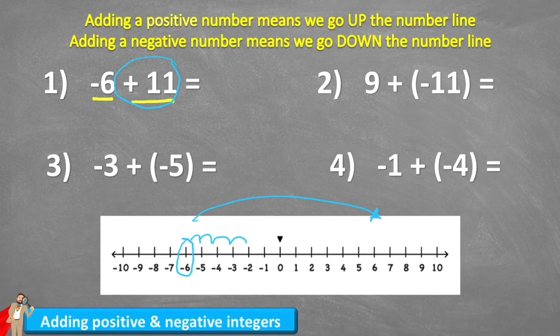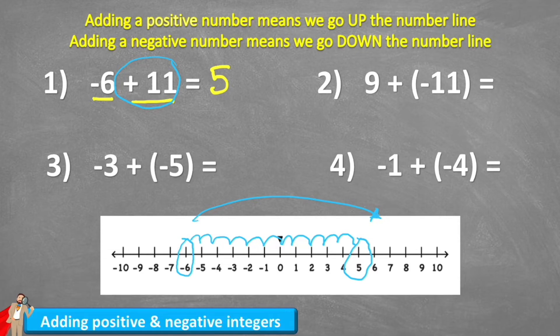One, two, three, four, five, six, seven, eight, nine, ten, eleven — and we land on five. So negative six plus 11 equals five. Question one, not too challenging. Let's have a look at question two — this is a bit harder.